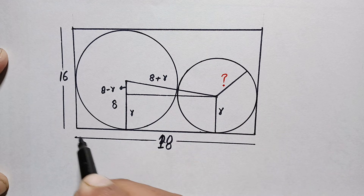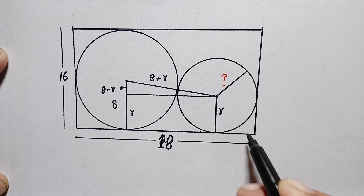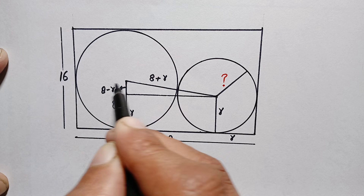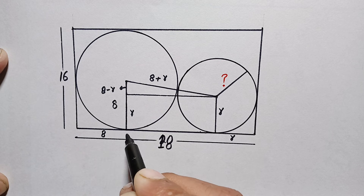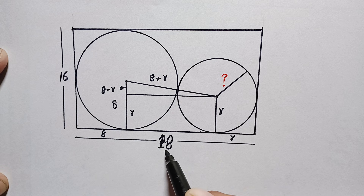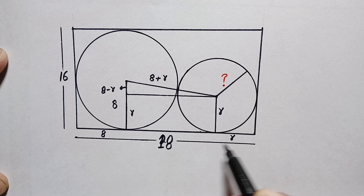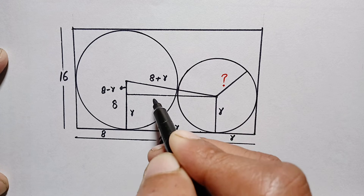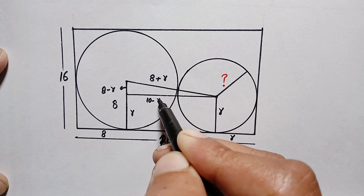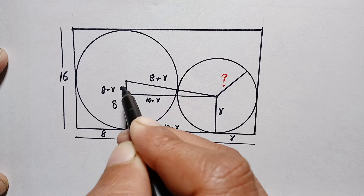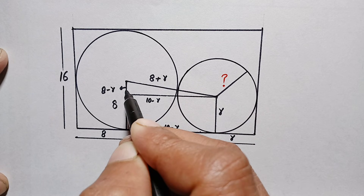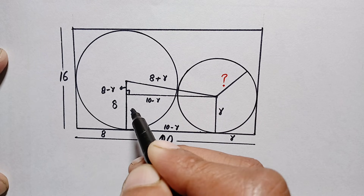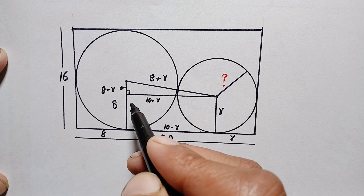To find the unknown side length, we note that this length is parallel to the radius of the smaller circle, so it is small r. This length is parallel to the radius of the bigger circle, so it is 8 units. The remaining length is 18 minus 8 minus r, which simplifies to 10 minus r. This line is also 10 minus r. Since this line is perpendicular to the radius, the angle at this point is a right angle.